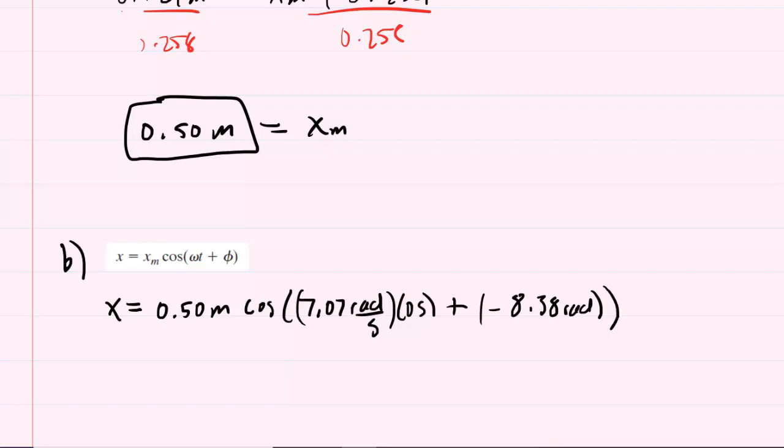Keep your calculator in radian mode, please, for all these calculations. And when you punch this into your calculator, you're going to get negative 0.25 as your answer. And that will come out in meters. So this is the correct answer to part B.